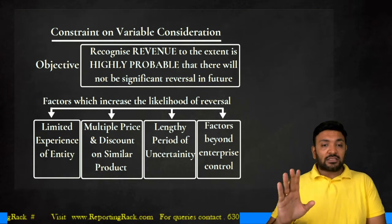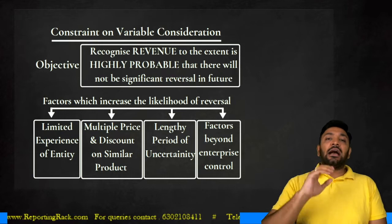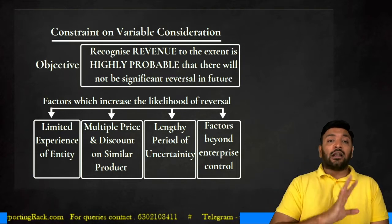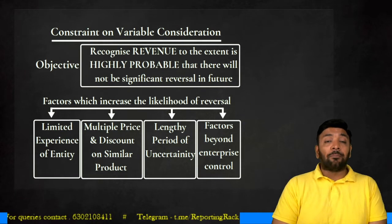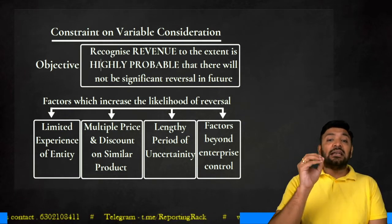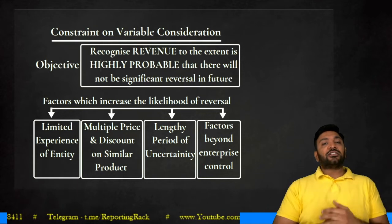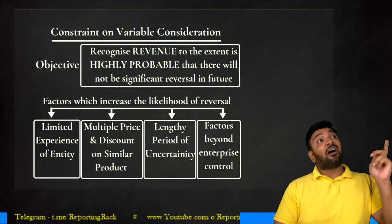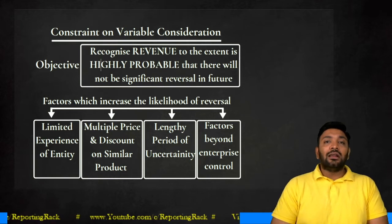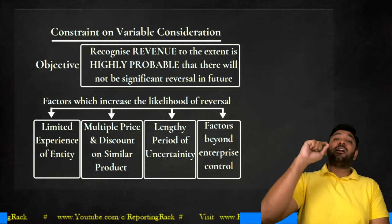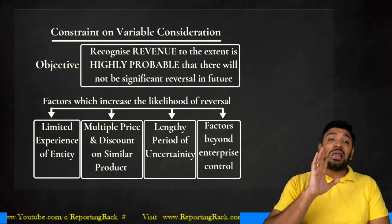I will not include the bonus. Number two: multiple prices and discounts of similar products have been available — I sold this product at 95, 98, 110, 120; I don't have one determined price. In such cases, constraint on variable consideration becomes applicable. Number three: there is a lengthy period of uncertainty — I am entitled to receive a bonus, but only if the number of defects during five years is limited to 10. That bonus comes after five years.